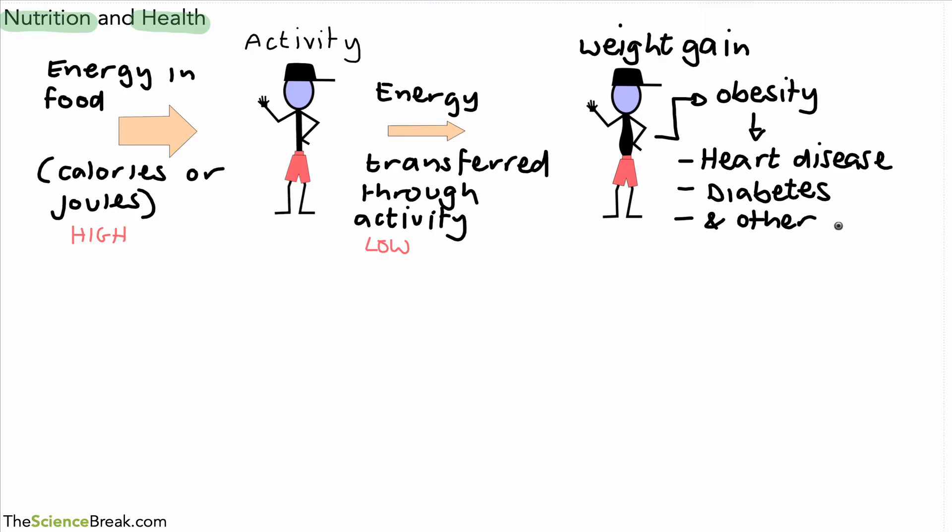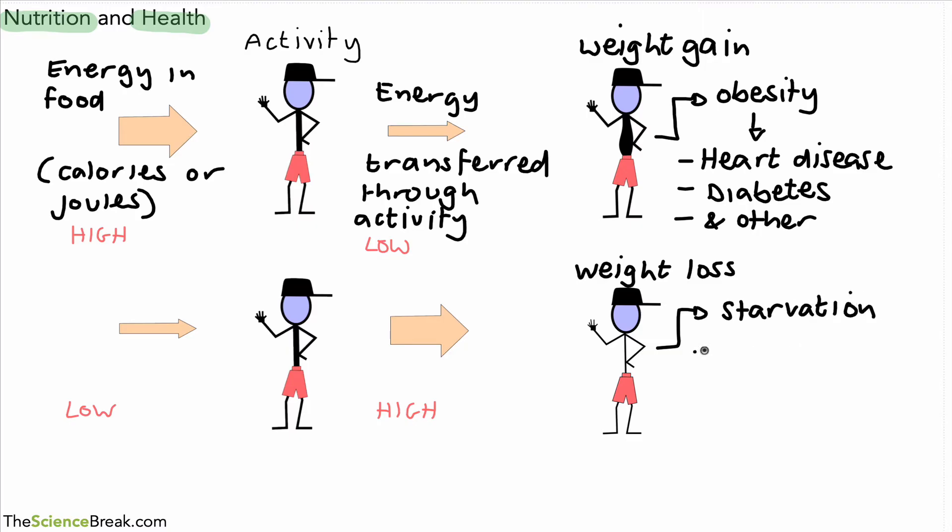So these are both linked to obesity, being well overweight, and there are other diseases as well that are linked to obesity. Now imagine the opposite scenario. Imagine we have a person and the amount of energy that they have in their food is less than the energy that they transfer through activities. What happens then? Well, the amount of energy is low that goes in compared to the amount of energy that's used in activities. Low going in, high coming out. You can imagine that over time the person would lose weight. So we call this weight loss. And again, if this continues over a long period of time, it could lead to what's called starvation.